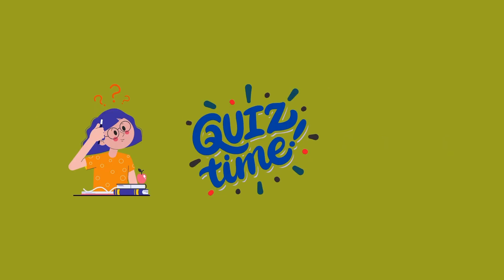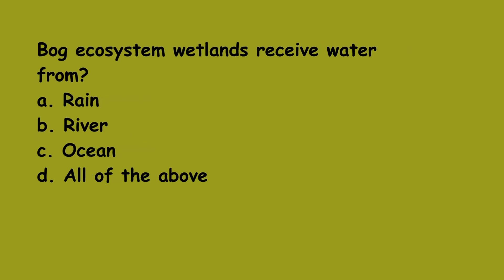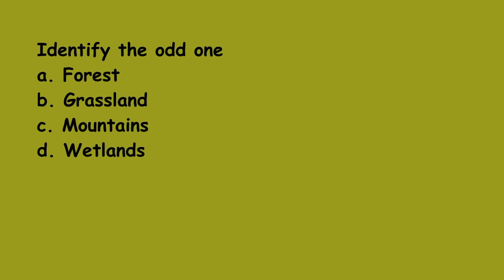Let us test your knowledge with the following questions. Name the area which is covered by water most of the time: A. Mountain, B. Wetlands, C. Grassland, D. Forest. The answer is B, Wetlands. Next question: Bog ecosystem wetlands receive water from A. Rain, B. River, C. Ocean, D. All of the above. The right answer is A, Rain — bog ecosystem wetlands receive water from rain. Now identify the odd one out: A. Forest, B. Grassland, C. Mountain, D. Wetlands. The answer is D, Wetlands.